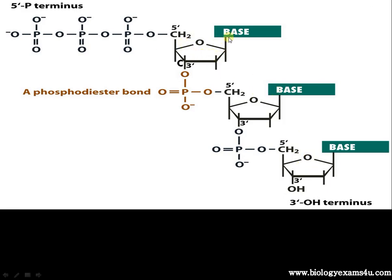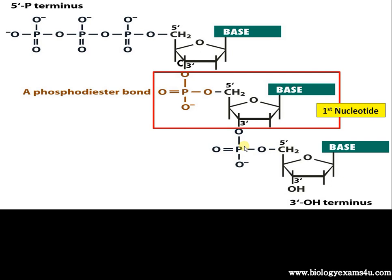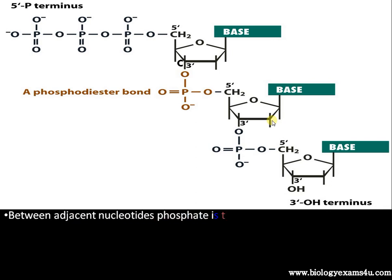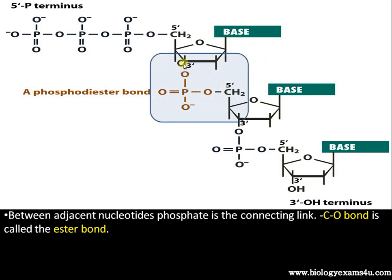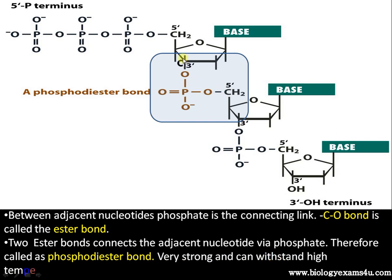A nucleotide consists of a sugar, a nitrogenous base, and a phosphate group. The phosphodiester bond connects two nucleotides via C–O bonds — specifically the 3'-C–O and 5'-C–O bonds linked through a phosphate group, which is why it is called a phosphodiester bond. It is a very strong bond that can withstand high temperatures.